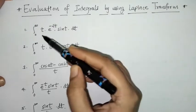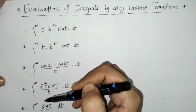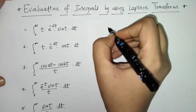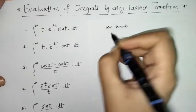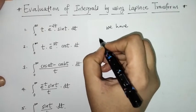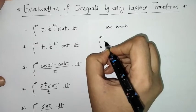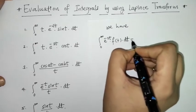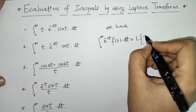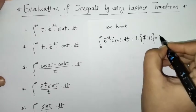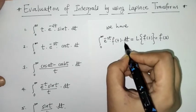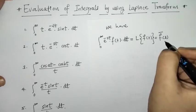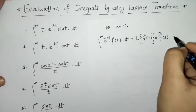Here we can check that the limits of this integration are zero to infinity, and in Laplace transform we know what the limits are. The definition of Laplace transform is the integral within limit zero to infinity of e raised to minus st times f of t, dt. When we solve this integral with respect to t we get a function of variable s, and that we call the Laplace transform of f of t.